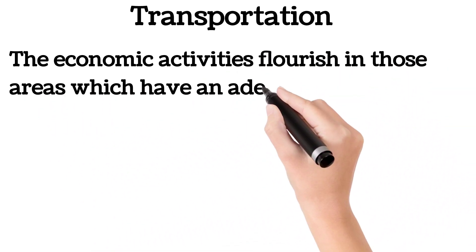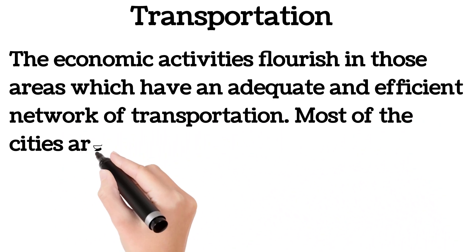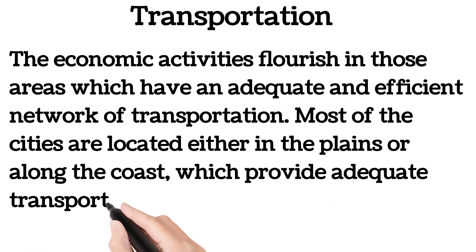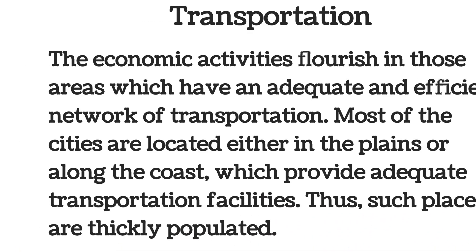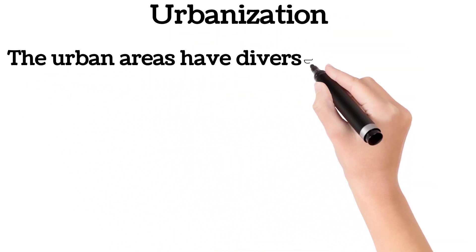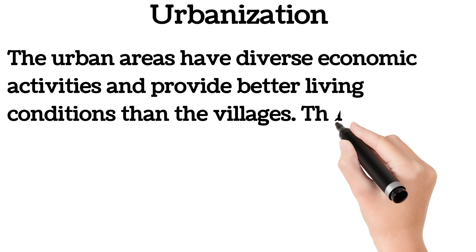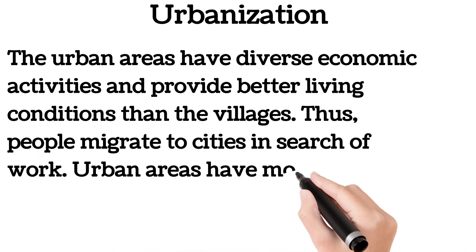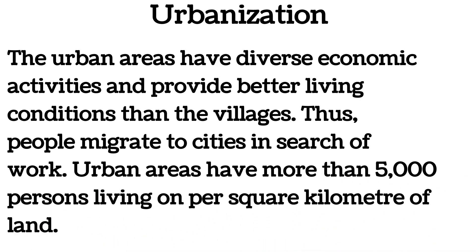Transportation: economic activities flourish in areas which have an adequate and efficient network of transportation. Most cities are located either in the plains or along the coast, which provide adequate transportation facilities, and thus such places are thickly populated. Urbanization: urban areas have diverse economic activities and provide better living conditions than villages, so people migrate to cities in search of work. Urban areas have more than 5000 persons living per square kilometer of land.